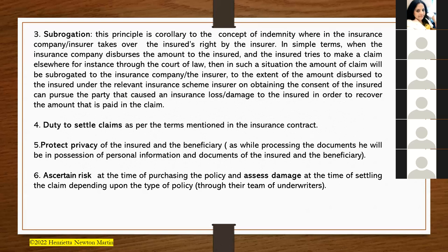Next is the concept of subrogation — a principle corollary to indemnity — where the insurance company takes over the insured's rights. In simple terms, when the insurance company disburses the amount to the insured, and the insured then tries to make a claim elsewhere such as in a court of law, the amount of the claim will be subrogated to the insurance company. The insurer, to the extent of the amount disbursed, and on obtaining the consent of the insured, can pursue the party that caused the insurance loss to recover the amount paid. Next is the duty to settle claims as per the terms and conditions in the insurance contract. The insurer also has a duty to protect the privacy of the insured and the beneficiary, as while processing documents the insurer will be in possession of personal information like passports, ID cards, or birth certificates in the case of a life insurance policy.